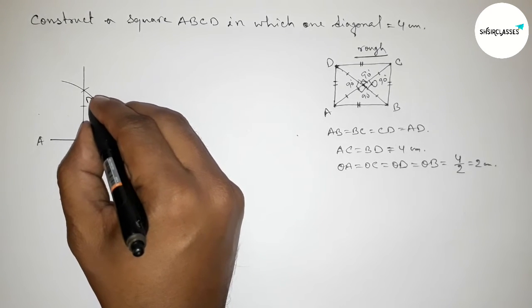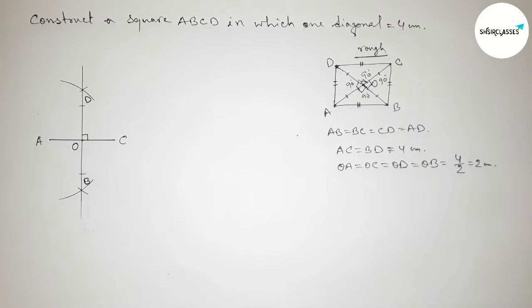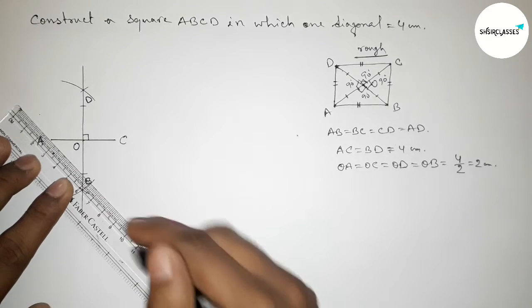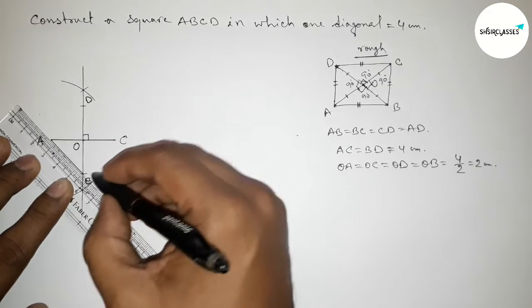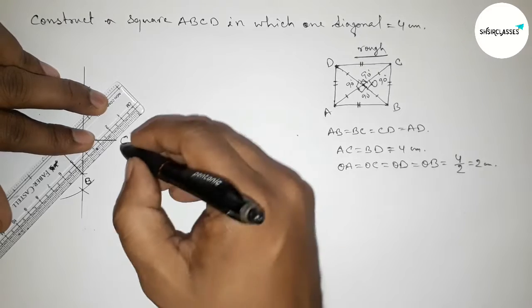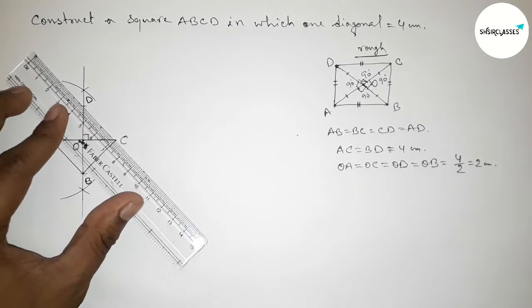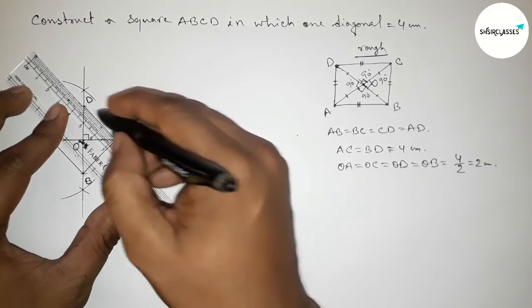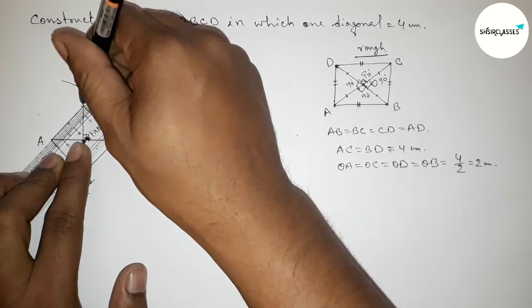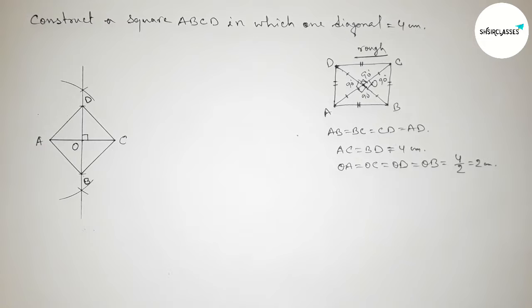Okay, so now taking here a point B and here D. So now first joining the side AB, then joining the side BC, then joining the side CD, and last joining the side AD to get the square ABCD.